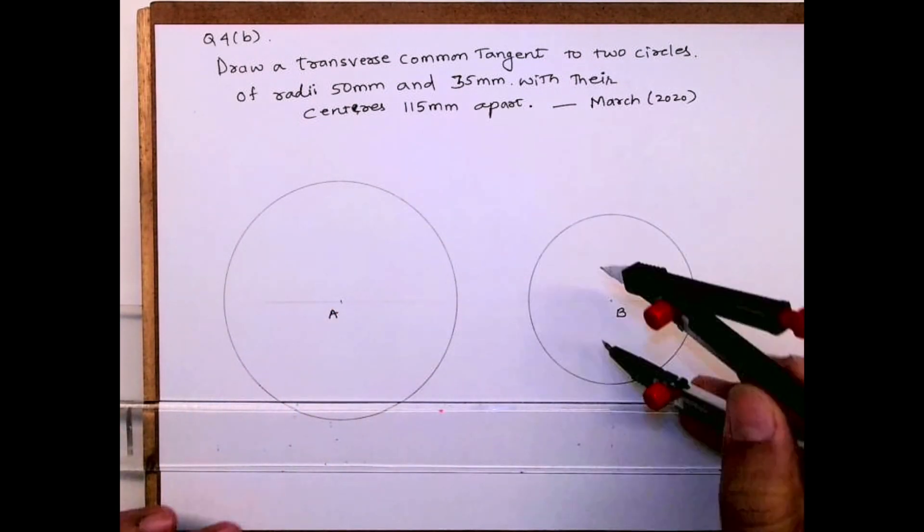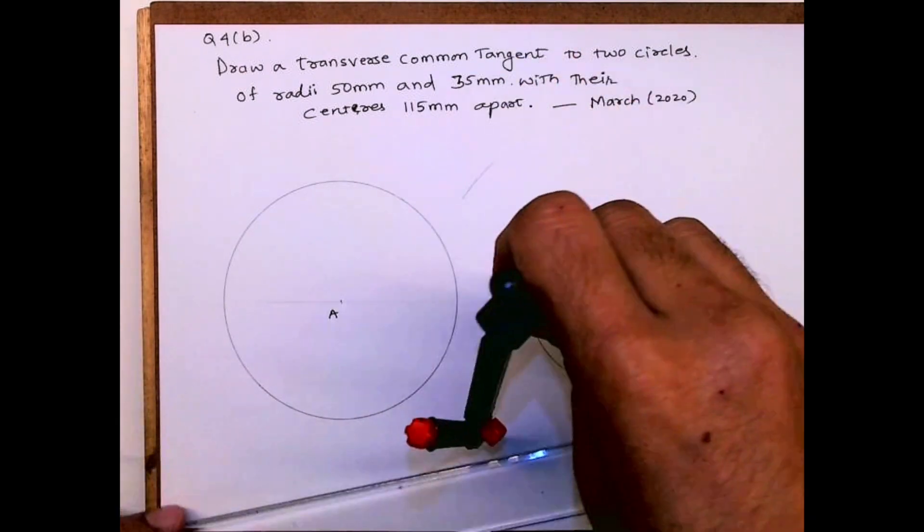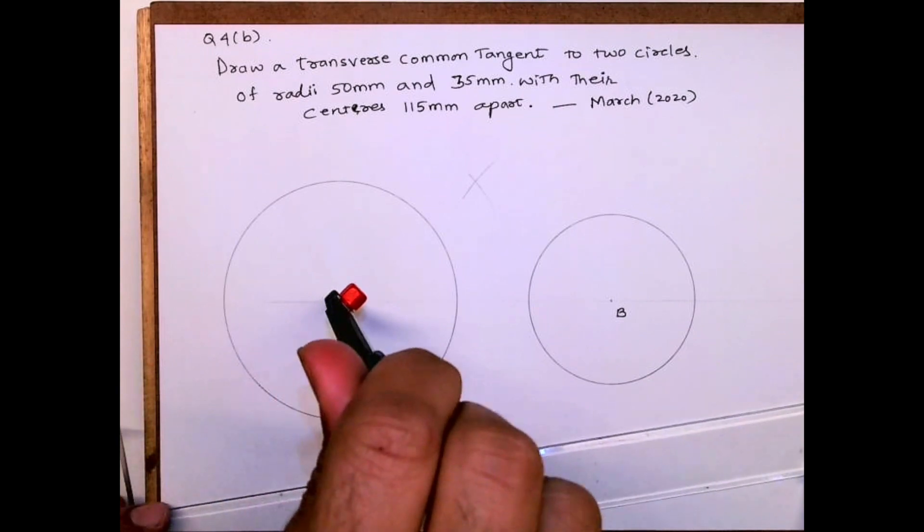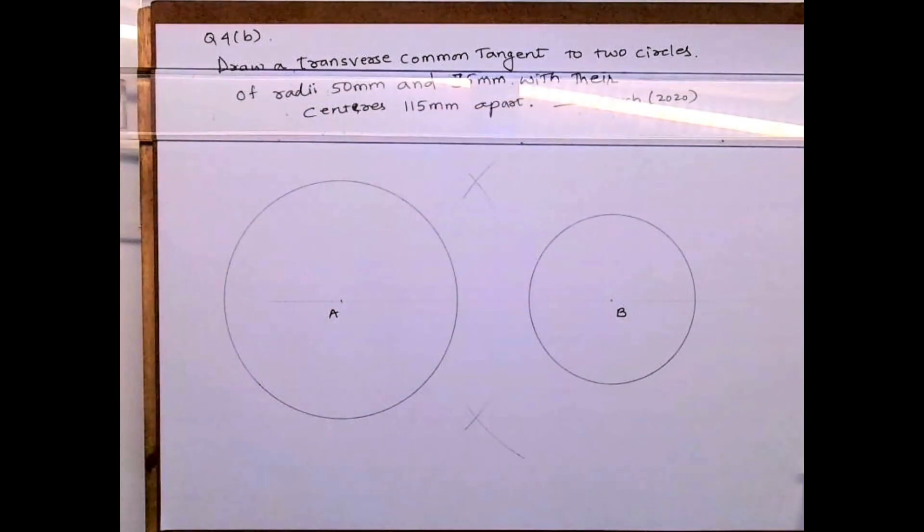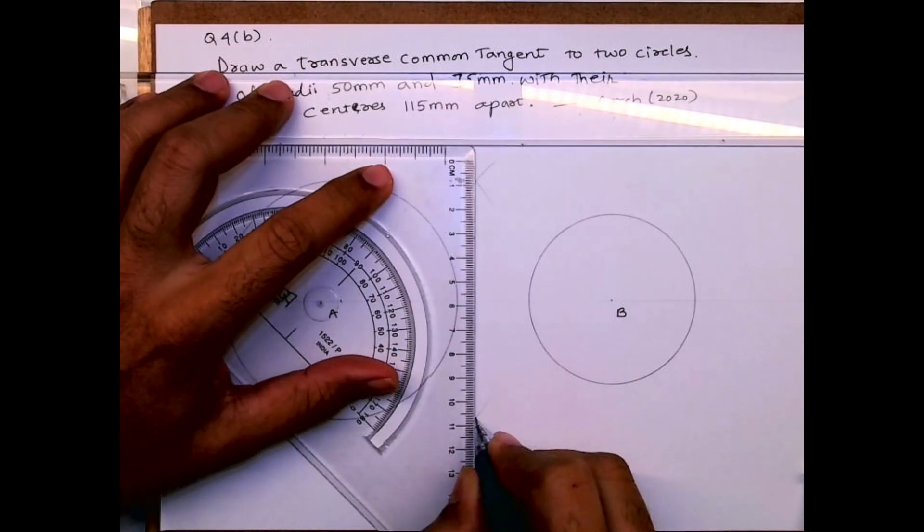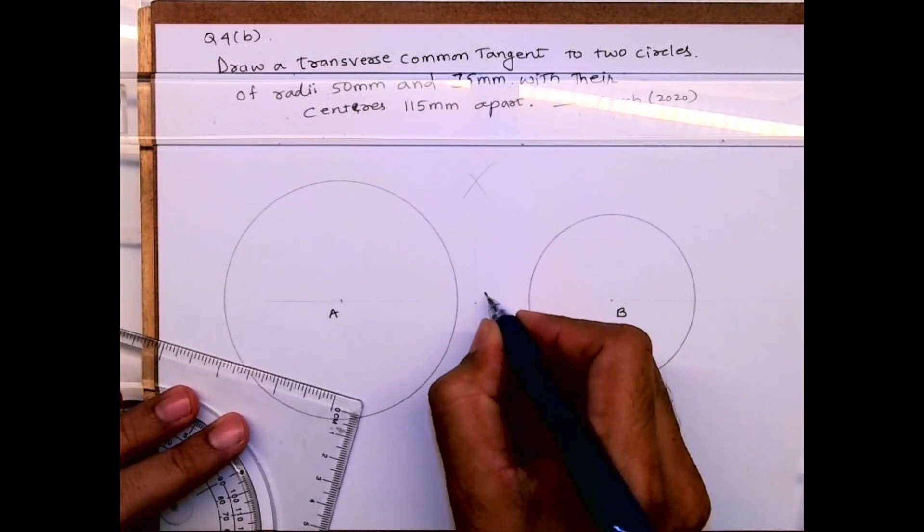After that we'll bisect AB. So we'll take from B, we'll take more than half of 115 and we'll cut from A and B, and we'll get the bisection of line AB. So we'll get the midpoint of line AB. You'll get point O.